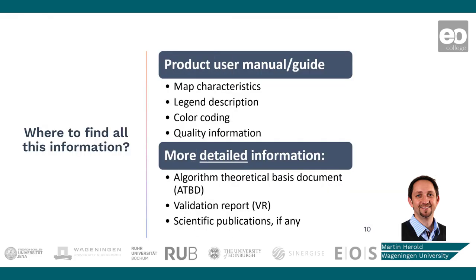With all that information to consider across the spatial, temporal, thematic, and quality domains, where does a user find it all? All good and well-documented land cover maps have what's called a product user guide or product user manual — some kind of well-structured documentation describing how the map was produced, the legend, color coding, and quality information. There should also be a validation report or scientific publication that you can use to assess that information and compare it with other land cover maps to find the best one for your purposes.